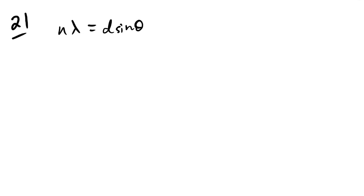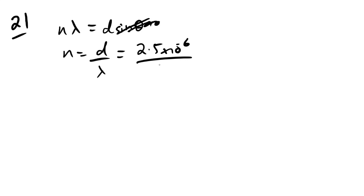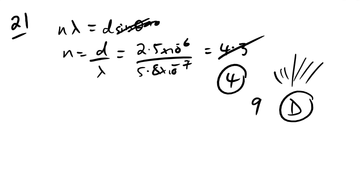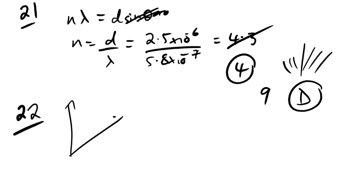Question 21: diffraction grating with d = 2.5×10⁻⁶ m and λ = 5.8×10⁻⁷ m. Maximum order n = d/λ ≈ 4.3, so n_max = 4. Counting central maximum plus 4 on each side gives 4 + 1 + 4 = 9 maxima. The answer is D.